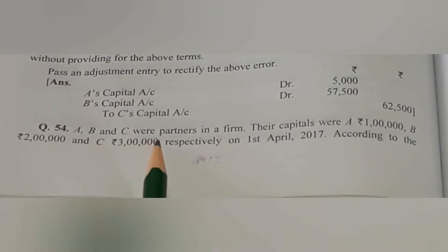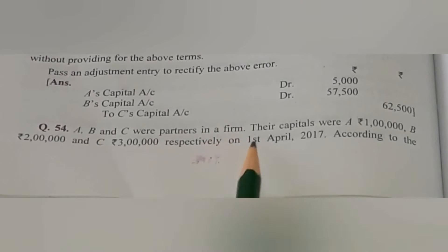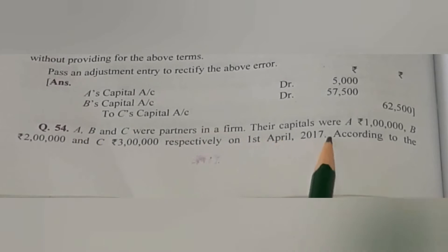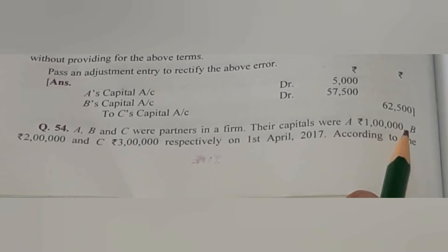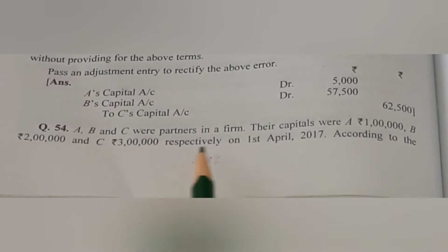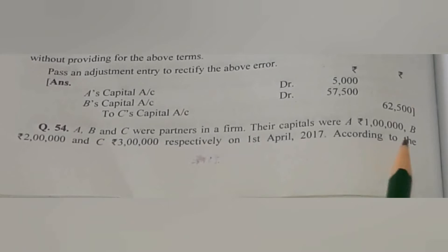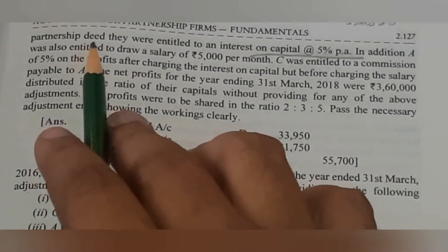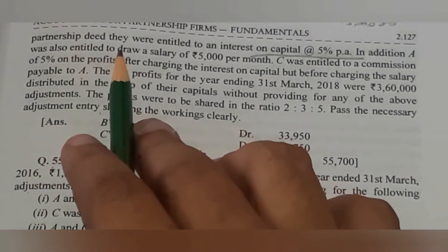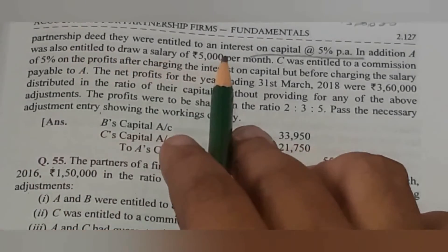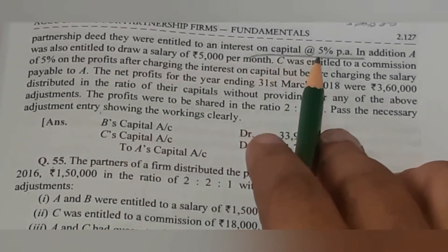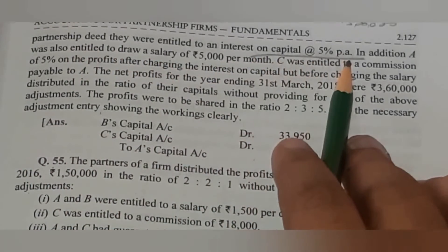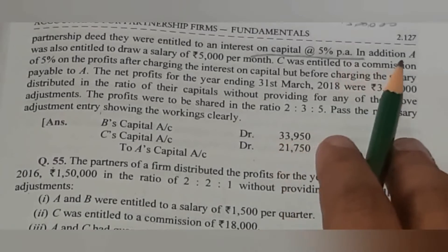A, B, C were partners in a firm. Their capital were 1 lakh, 2 lakh, and 3 lakh. On 1st April 2017, according to the partnership deed, they were entitled to interest on capital at 5% per annum.